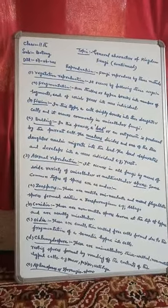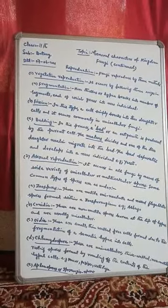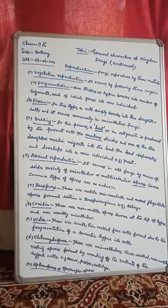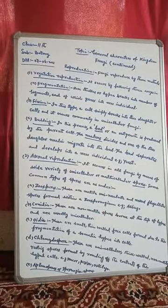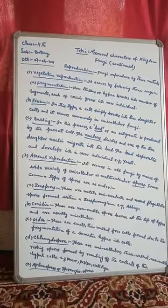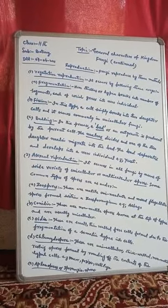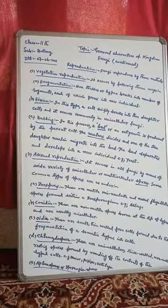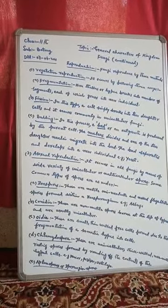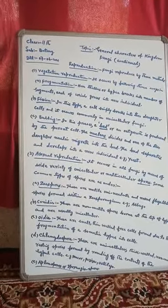Number two is fission. In this type of vegetative reproduction, a cell simply breaks into two daughter cells. It occurs commonly in unicellular fungi — that is, in cells which are made up of only one cell.